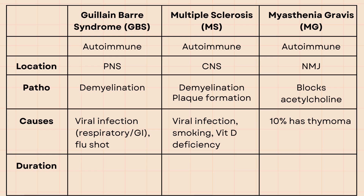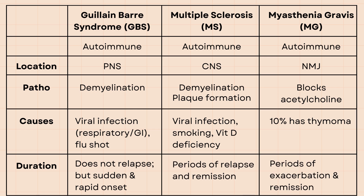Regarding duration, GBS is usually a one-time occurrence that does not relapse, although it has a sudden and rapid onset. Multiple sclerosis and myasthenia gravis can both have periods of relapse followed by periods of remission.